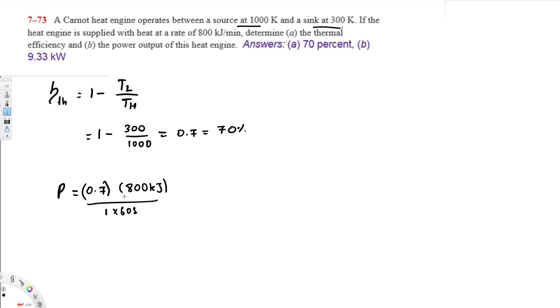If you calculate this one, that's going to give you 9.33. We have kilojoules here, so the answer is going to be kilowatts, because joules per second is watts, and kilojoules per second is going to be kilowatts. That's going to be the power output of this heat engine.